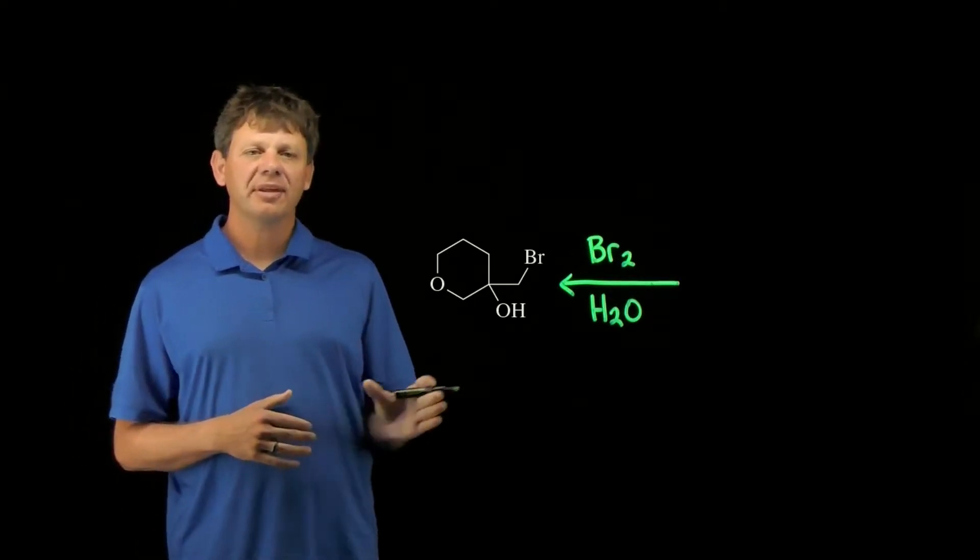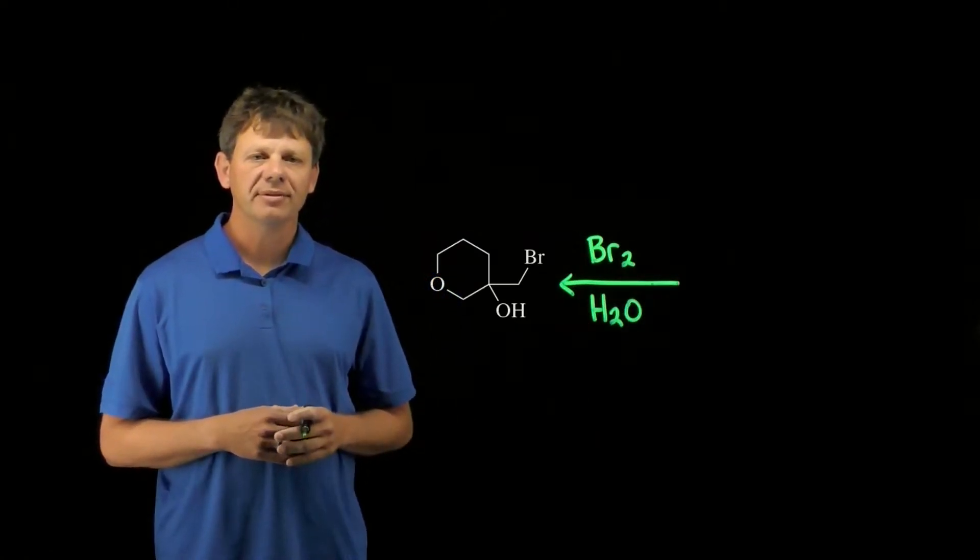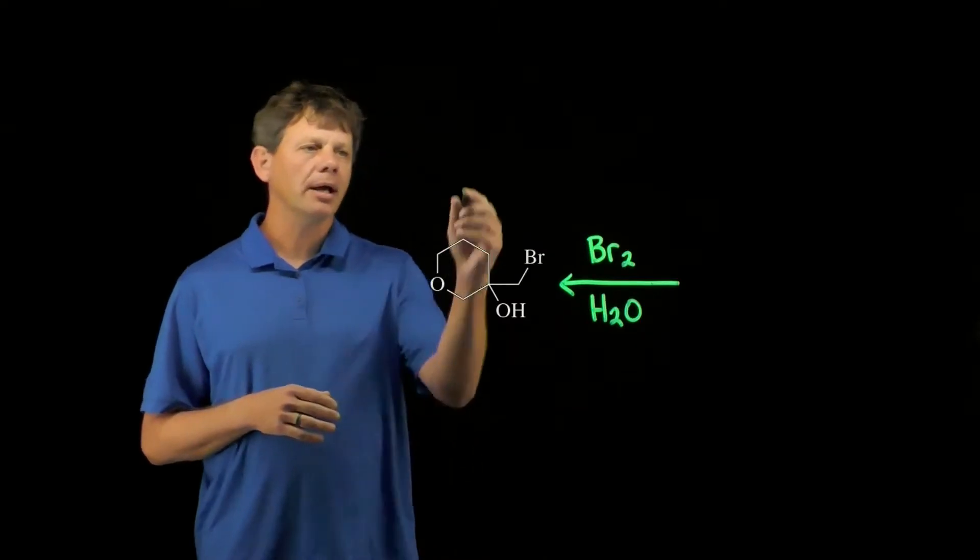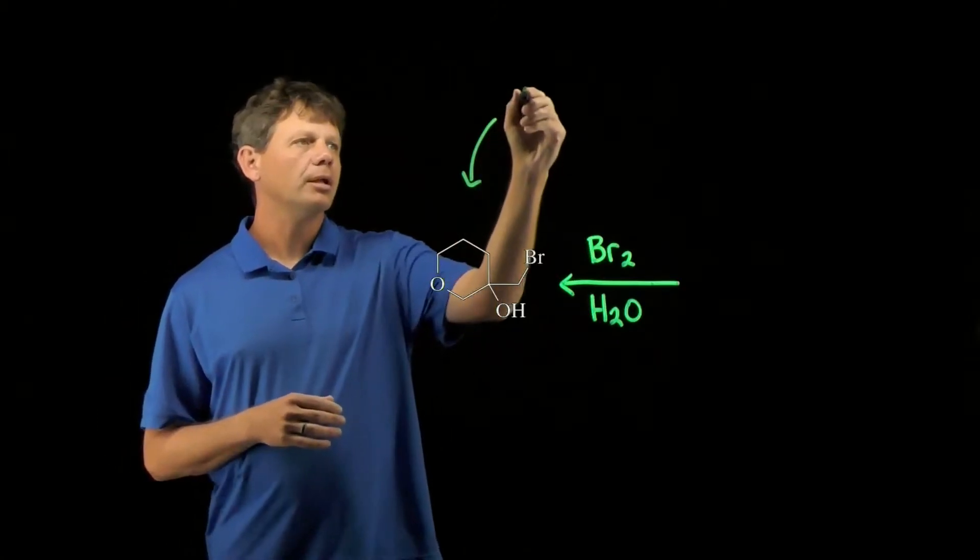This assessment asks us to design an alkene that upon reacting with bromine and water would give us this halohydrin. We know that these reactions proceed through a bromonium ion, so let's work backwards to identify the bromonium ion that would give this product.